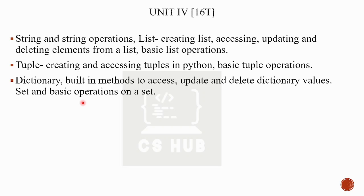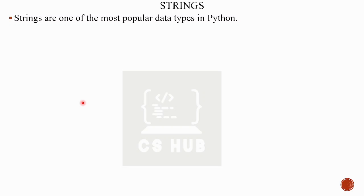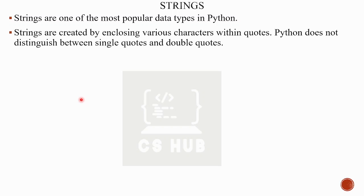We are going to show Unit 4 and all data types. We are going to show string. String is the most popular data type in Python. They are created by enclosing various characters within quotes. Python does not distinguish between single quotes and double quotes — there is no single character type like in C or C++.